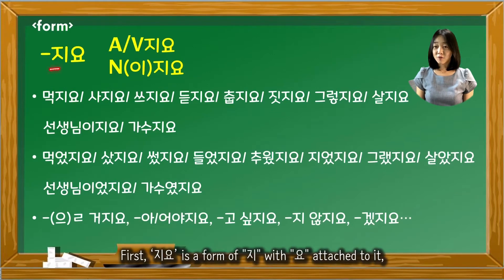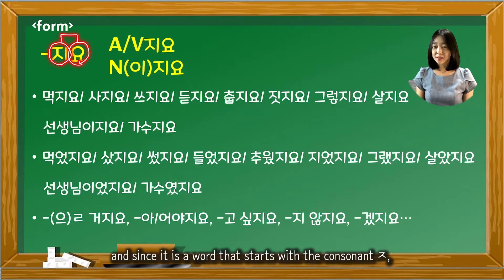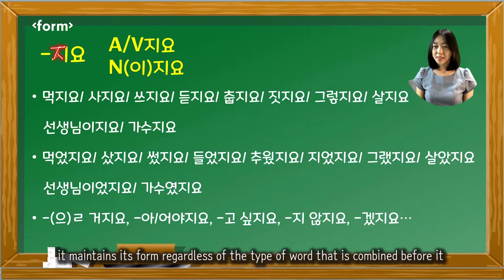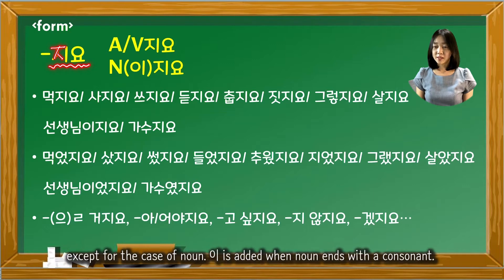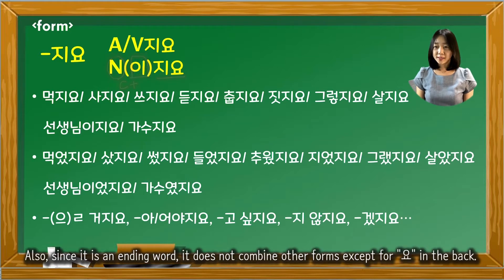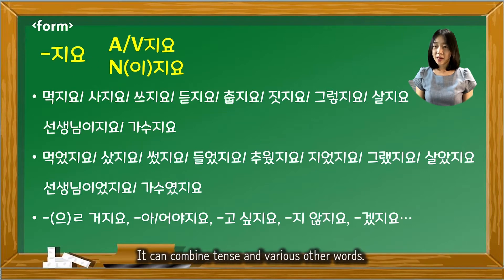First, 지요 is a form of 지 with 요 attached to it. Since it is a word that starts with the consonant, 지요 maintains its form regardless of the type of word combined before it, except for the case of nouns. 이 is added when a noun ends with a consonant. Also, since it is an ending word, it does not combine other forms except for 요 at the back, but it can combine with tense and various other words.